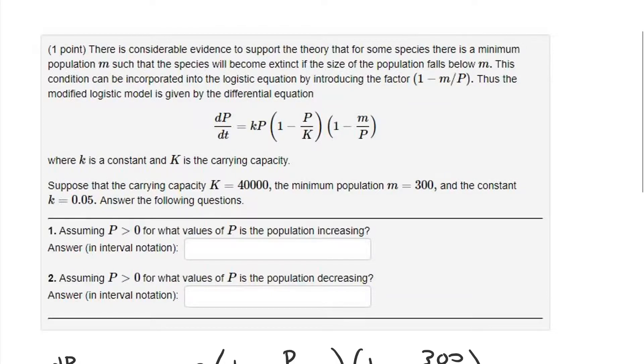Okay, so this question is about the modified logistic model. If you remember, the original logistic model looks something like this: the rate of change of a population is equal to a constant k times the population times this factor 1 minus P over K. Now, the modified model adds in this factor here, 1 minus m over P. And what this kind of does is it gives a minimum population. It says that the species will become extinct if the size of the population falls below this minimum m.